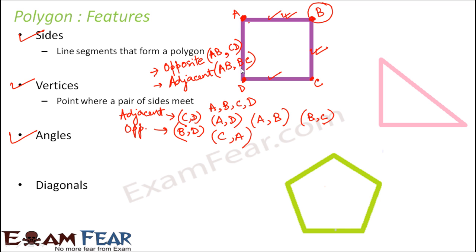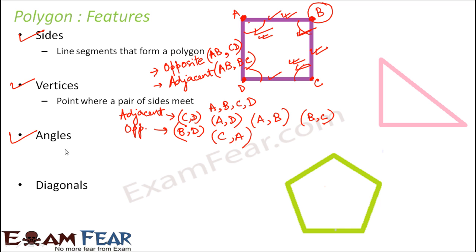The third feature is angles. When you look at this polygon, there are four interior angles — one at each corner. Adjacent angles are those next to each other, for example this angle and this angle are adjacent. But when you look at angles that are across from each other, those are opposite angles.